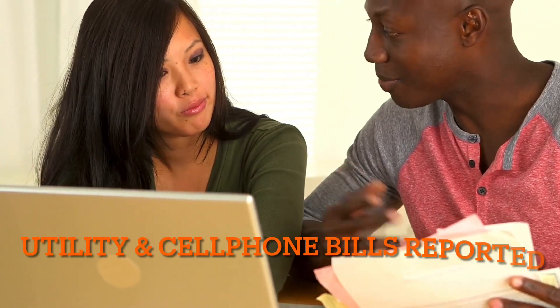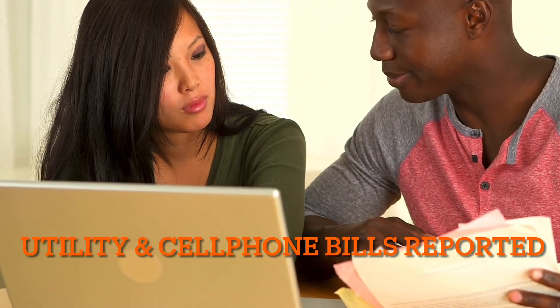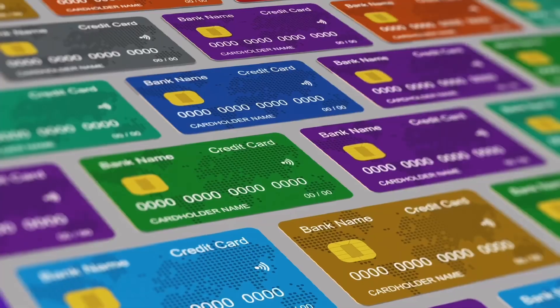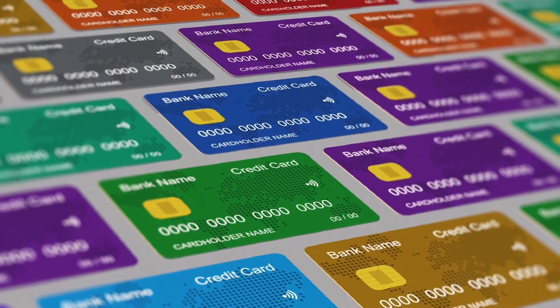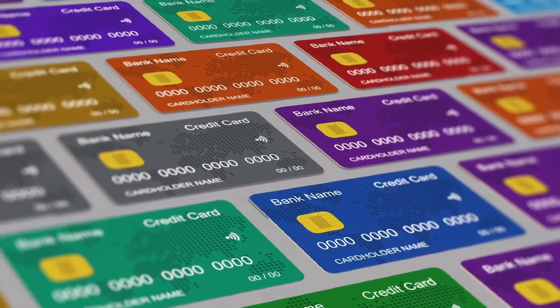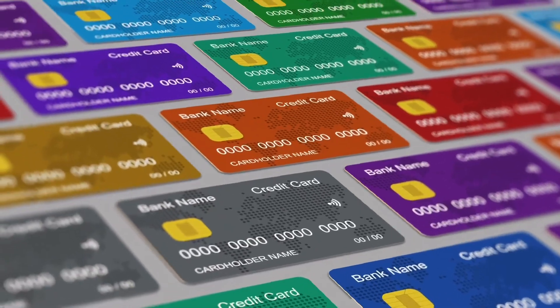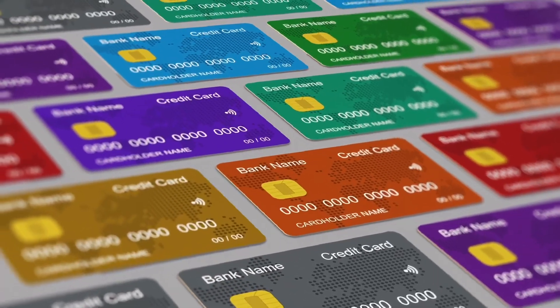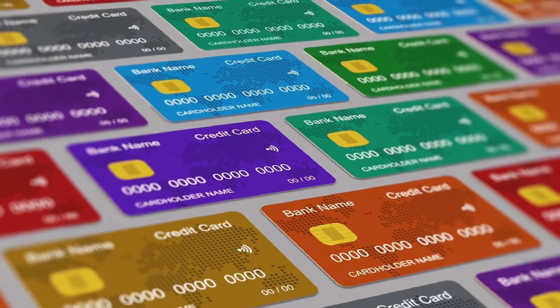Also, you can report your utility and cell phone bills to the credit bureaus. Some credit bureaus like Experian will credit you for utility and cell phone bills that you are already paying. In the past, these payments did not positively impact your score, but make sure that you take advantage of these credit building opportunities now.